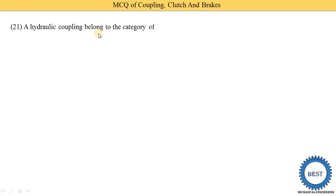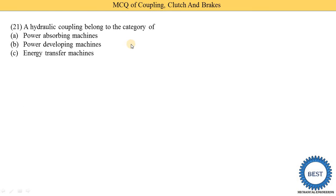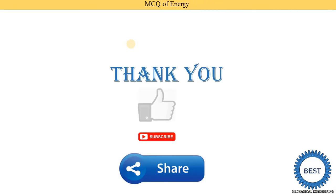A hydraulic coupling belongs to the category of — power absorbing machine, power developing machine, energy transfer machine, or energy generating machine. The hydraulic coupling is used to transmit power, so it is called an energy transfer machine. Option C is the correct answer. Thank you for watching this video — if you learned something, please like the video, subscribe to my channel, and share with your friends.